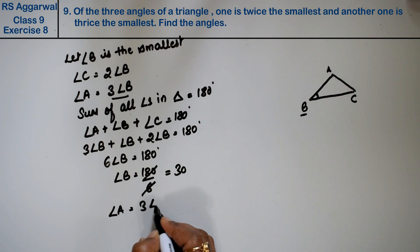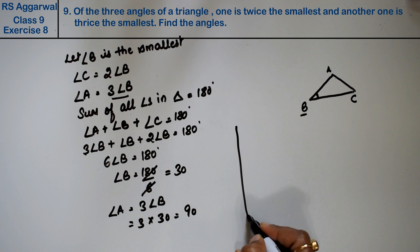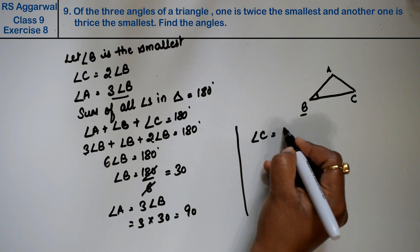Now angle A is thrice angle B, so 3 times 30 equals 90 degrees. And angle C is twice angle B.